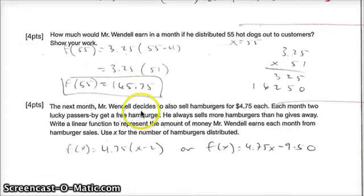Next month, Mr. Wendell decides to also sell hamburgers for $4.75 each. Each month, 2 lucky customers get a free hamburger. He always sells more hamburgers than he gives away. Write a linear function to represent the amount of money Mr. Wendell earns each month for hamburger sales. Use x for the number of hamburgers distributed.